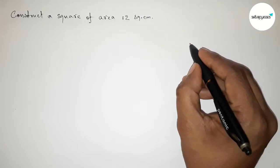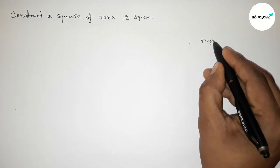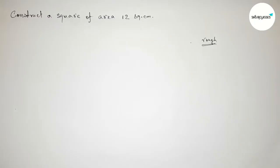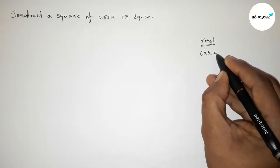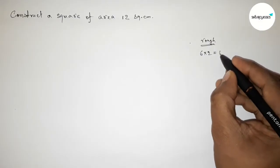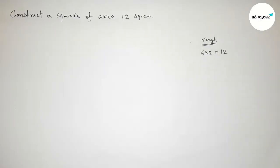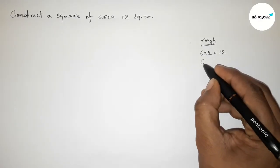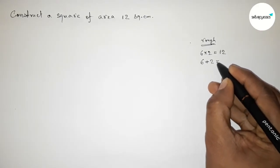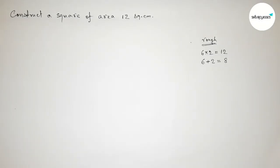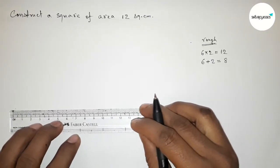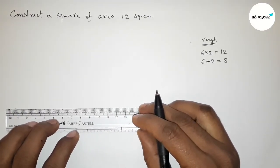First, let us discuss some important calculations. We can write here six into two — six times two is twelve. Also, six plus two equals eight. So first we have to draw a line segment of length eight centimeters.